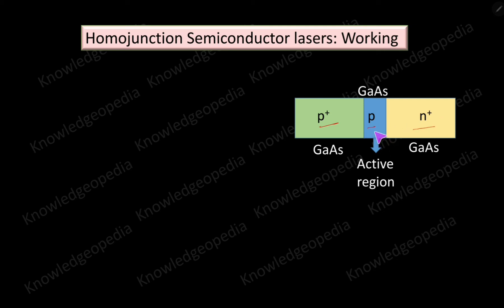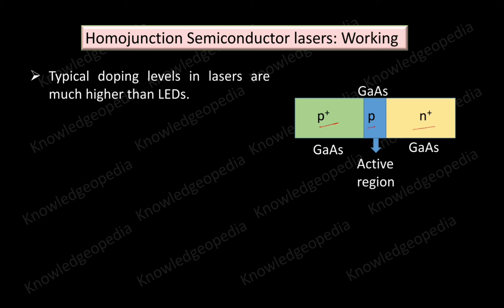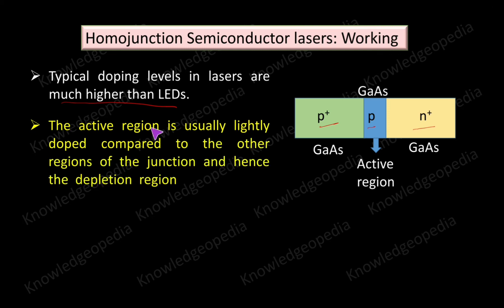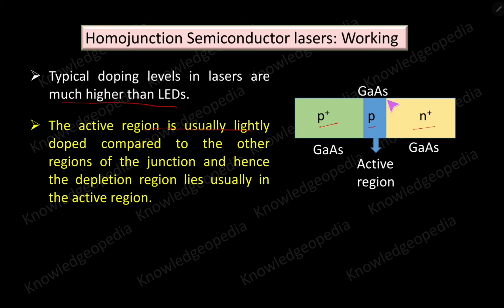Comparing with an LED, the doping level of a laser is generally much higher. The active region is lightly doped compared to the other two regions, and hence the depletion region lies mostly within the active region. Since the depletion region extends more into the lightly doped region, most of the depletion region is confined to this active region.